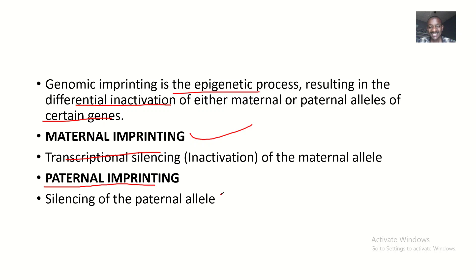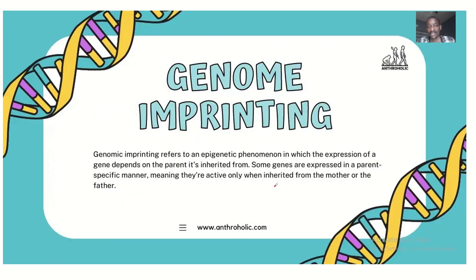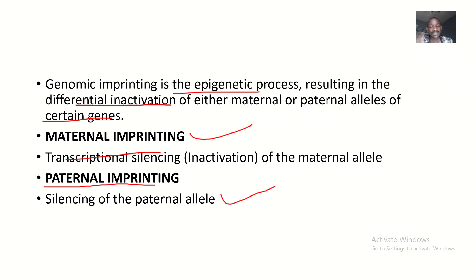If there is paternal imprinting, there is silencing of the paternal alleles — a massive inactivation of the paternal alleles. So in this case, the individual will be inheriting more of the mother's features.